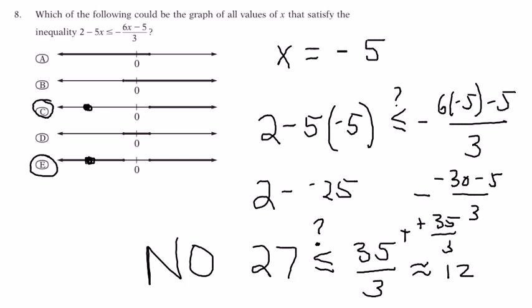So, x equals negative 5 does not satisfy the inequality. Therefore, choice C is the winner. Because choice C does not include 0 and it does not include negative 5, and C is the only one that doesn't include 0 and doesn't include negative 5.